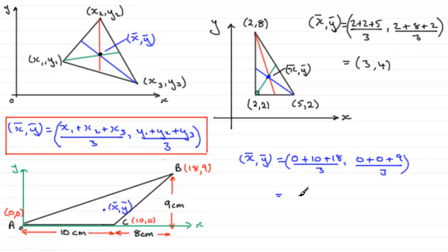And what does that give us? Well, it gives us 28 divided by 3. So we'll just leave that as 28 over 3. And then here we've got 9 over 3, which is 3.